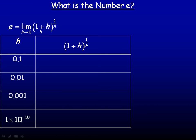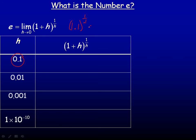If h is tending towards 0, the base is tending towards 1, because if h gets closer to 0, the base gets closer to 1. But since the denominator in this exponent is approaching 0, we're dividing 1 by smaller and smaller numbers, so the exponent is approaching an infinite value. We'll put some numbers in place of h, starting with 0.1, which gives us 1.1 to the power of 10.